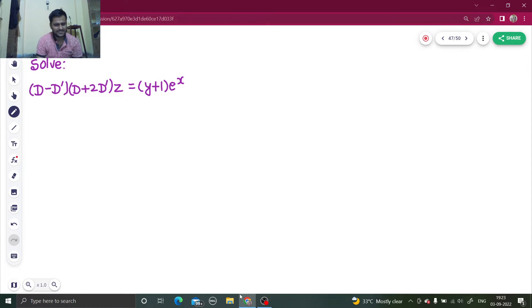How to find the roots? It is easy. Replace d by m and d dash by 1. So you get (m minus 1)(m plus 2) equated to 0.